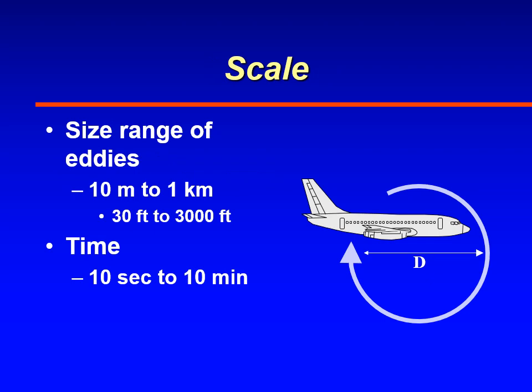Turbulence that is felt by aircraft is a result of eddies in our atmosphere. Those eddies, or swirls, have diameters between 10 meters and 1 kilometer, or in English units, between 30 feet and 3,000 feet. These are very small-scale phenomena, and the time frames which they last are very short — only between 10 seconds to 10 minutes — so they're very difficult to forecast.